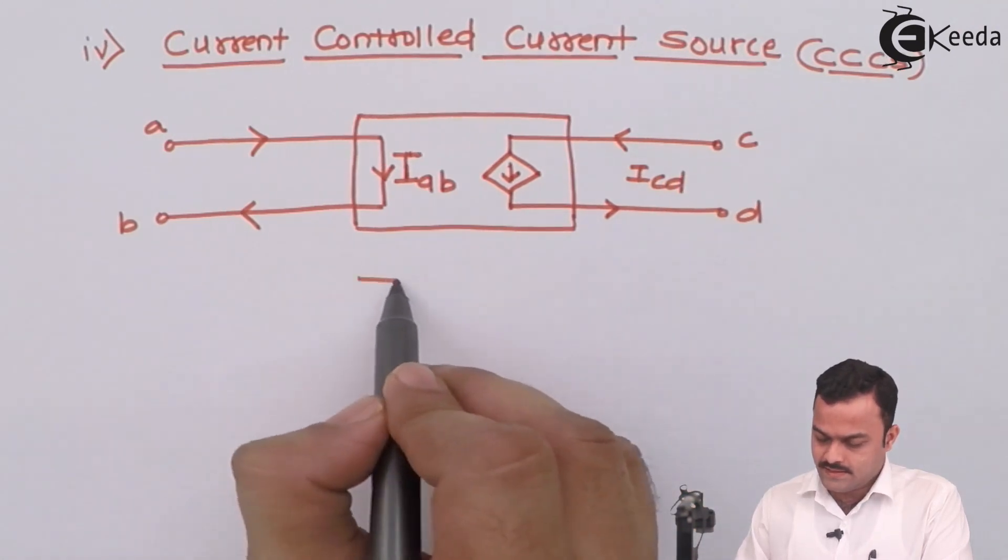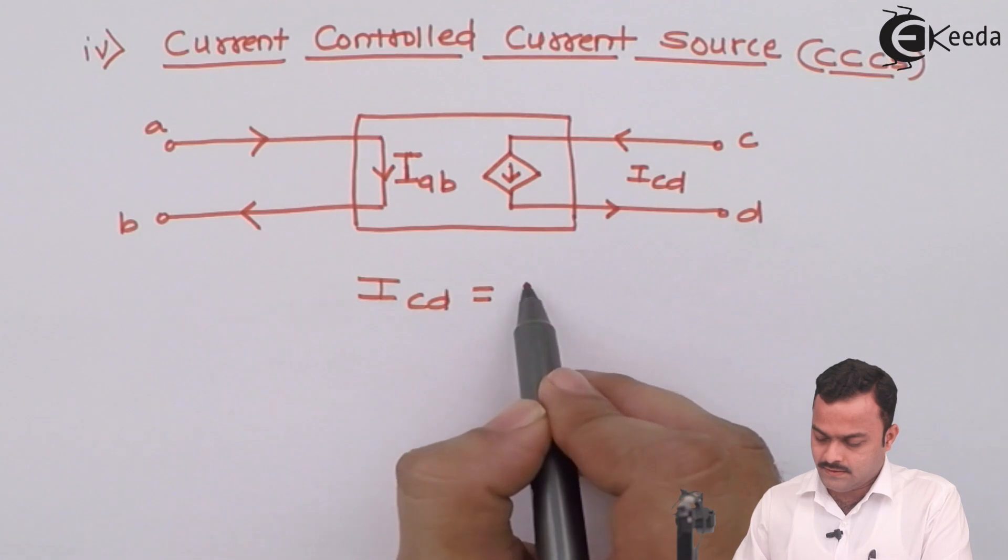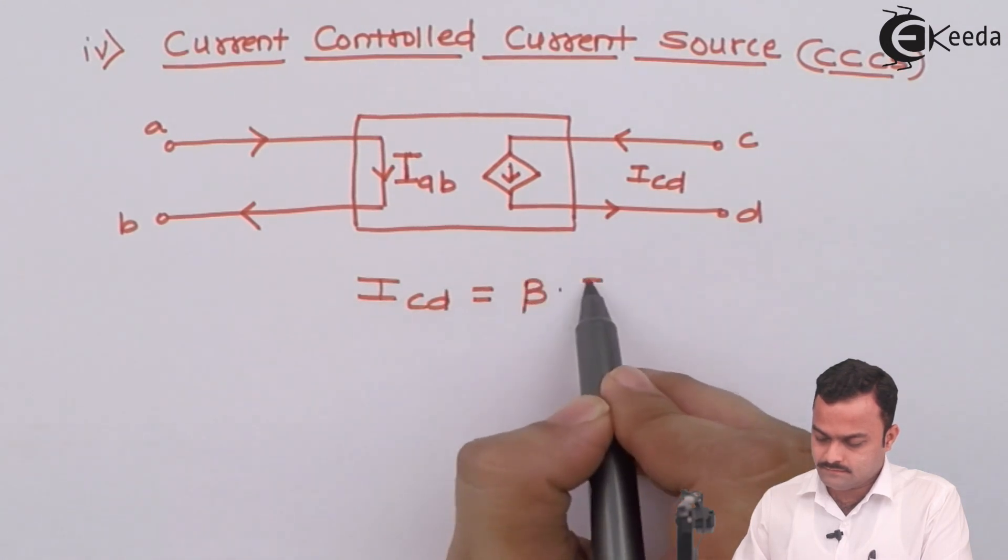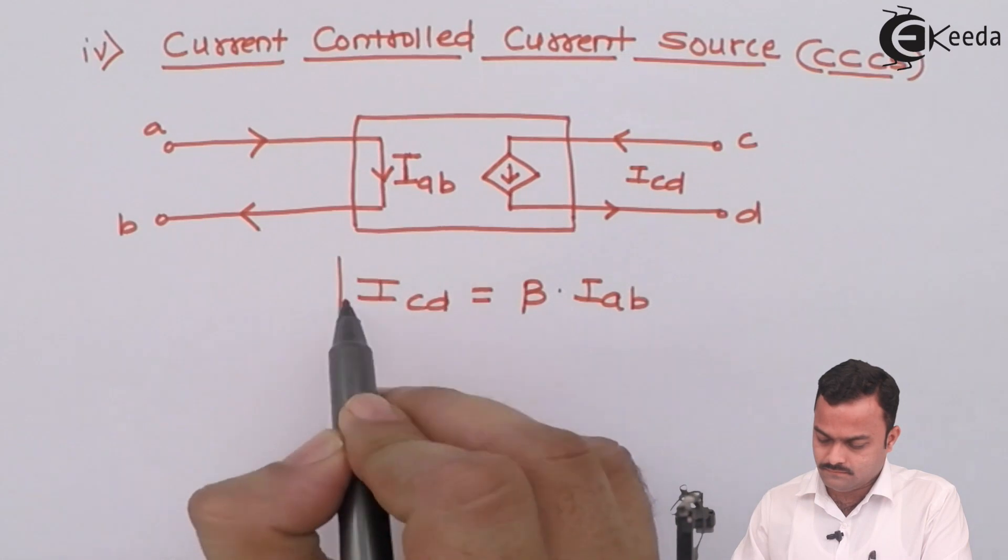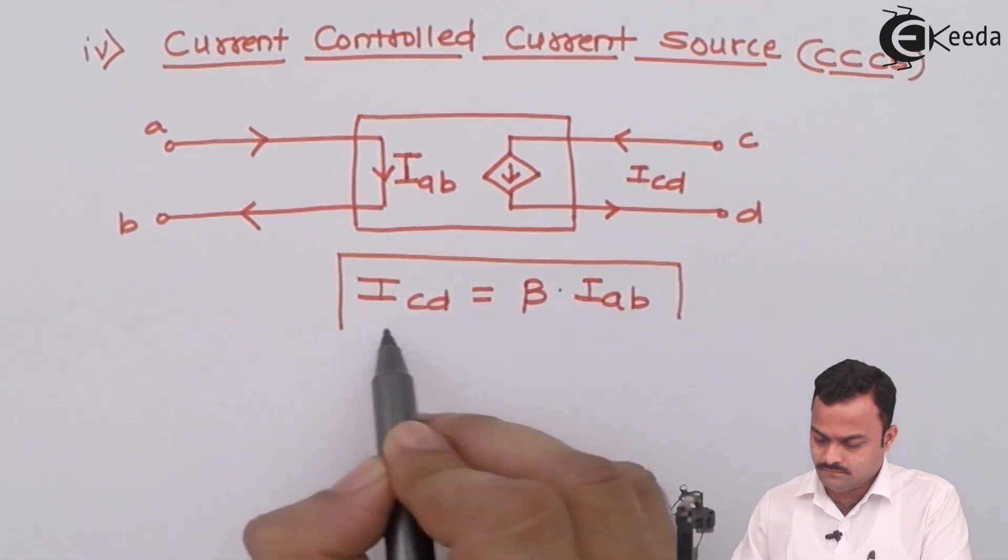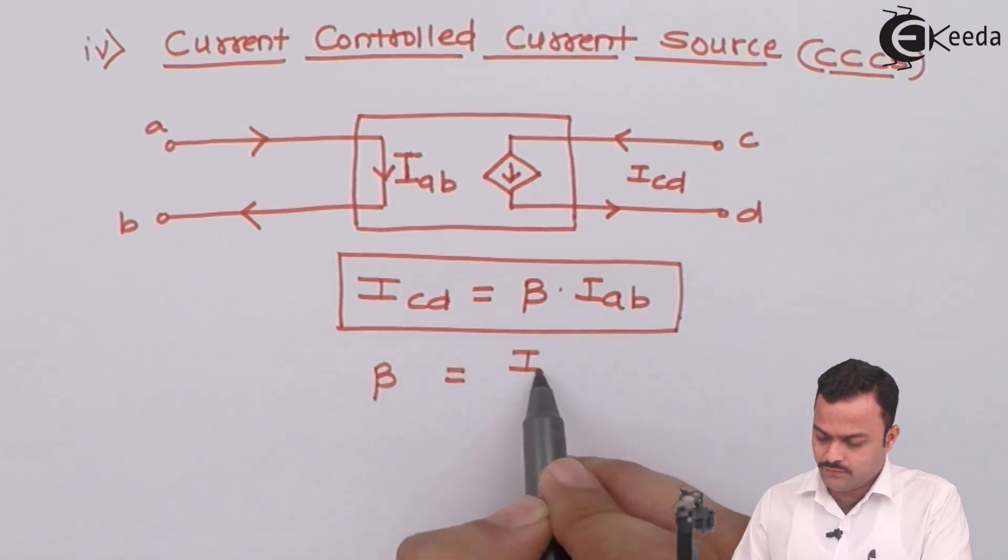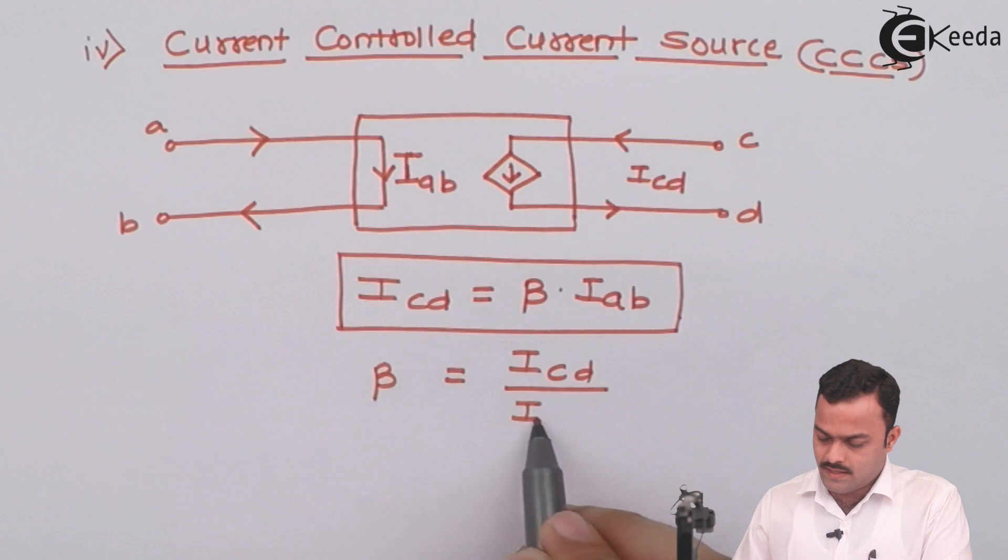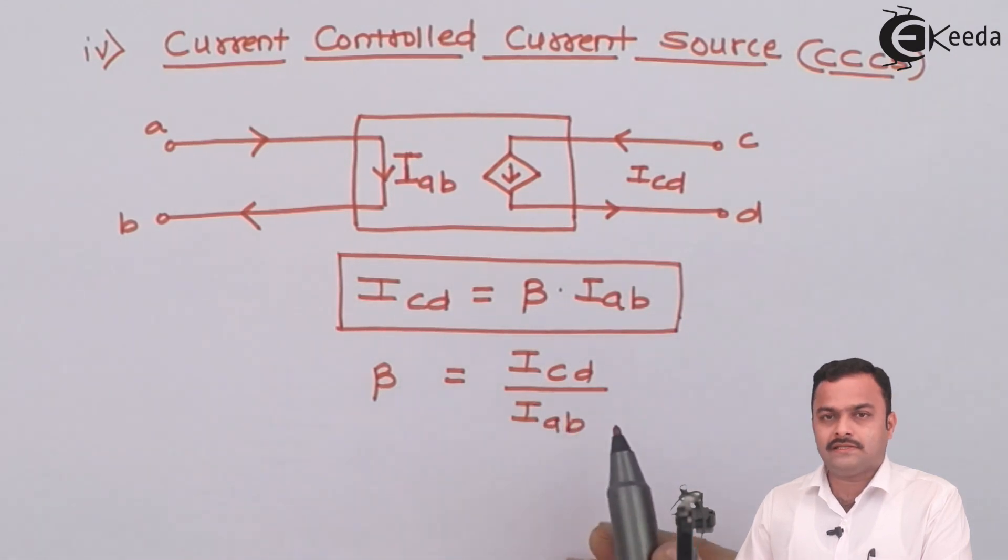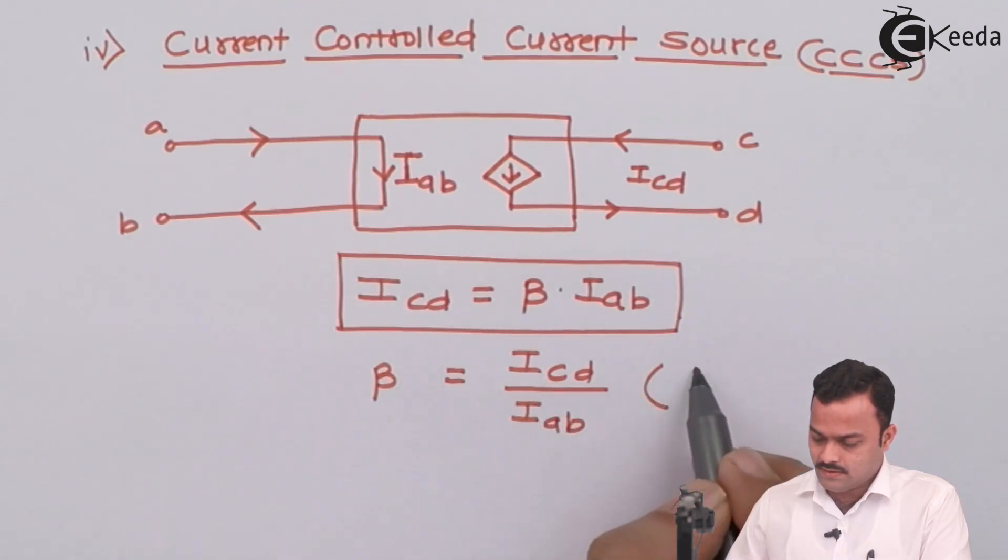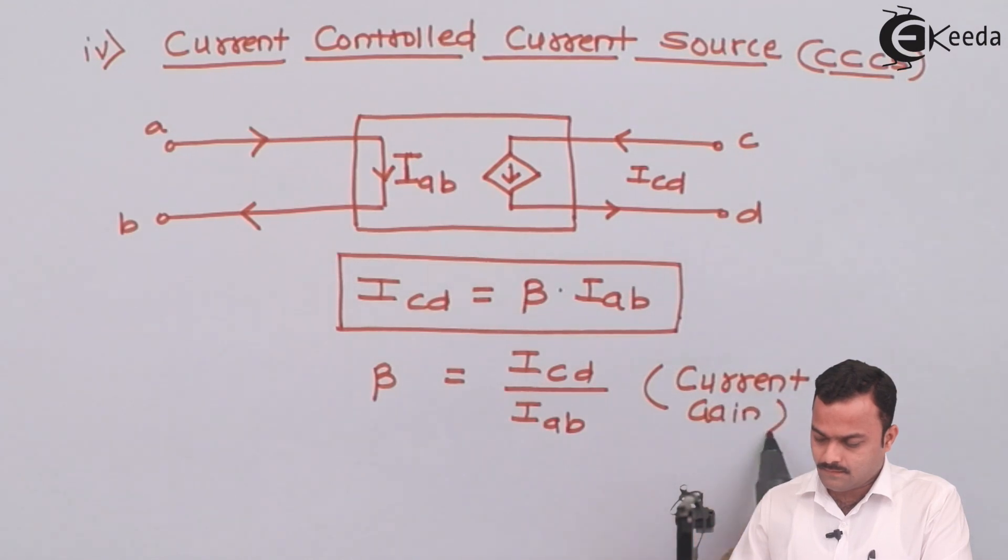I can get beta as ratio of two currents ICD and IAB, a dimension less quantity which we call as current gain. So here we have seen in our dependent sources we will be having four types depends upon which quantity is being controlled by which quantity.